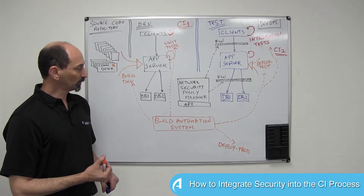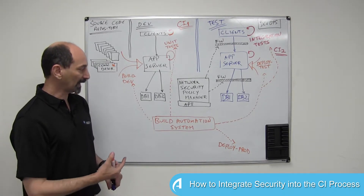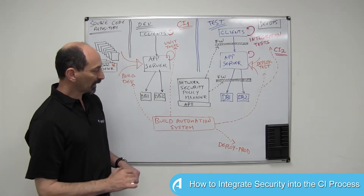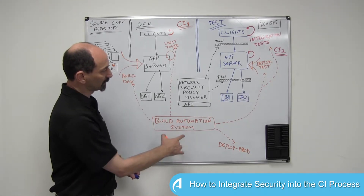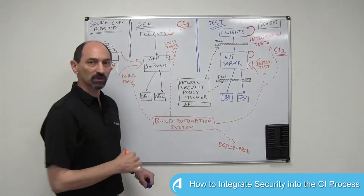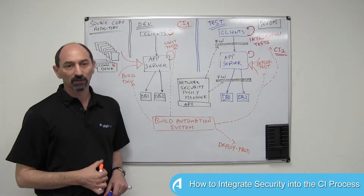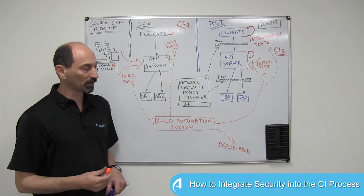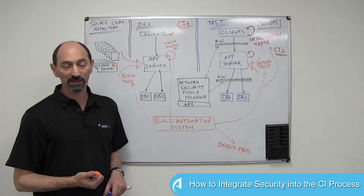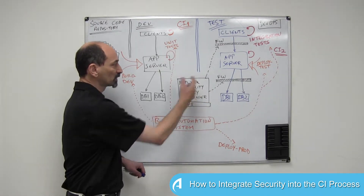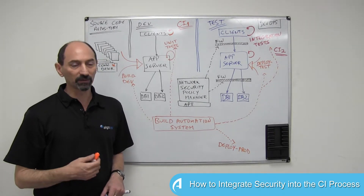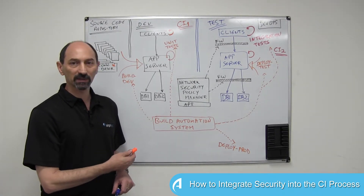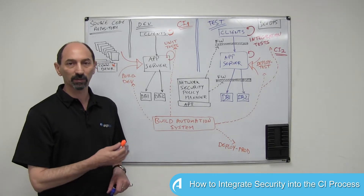The second challenge we need to address is how will the build automation system respond to this change? After all, the build automation system typically is not allowed to make changes to the firewall. First, it might not have the technical capability to do so. And secondly, even if it does, making changes to firewall policies typically requires governance. The security teams have to approve this, the changes have to be documented, and they have to be ready for audit.